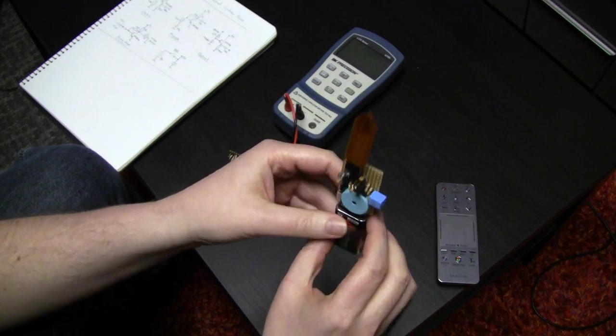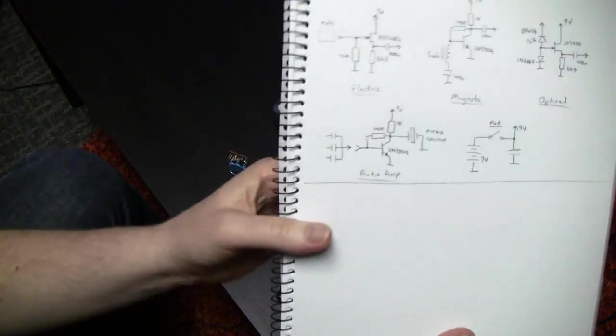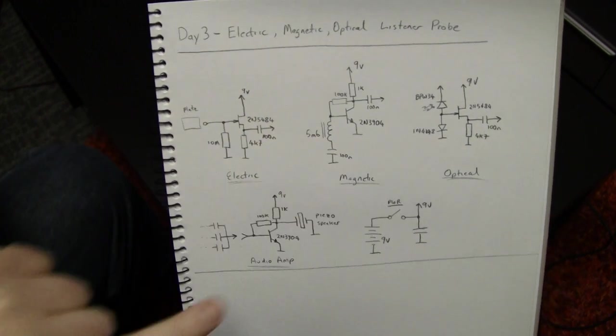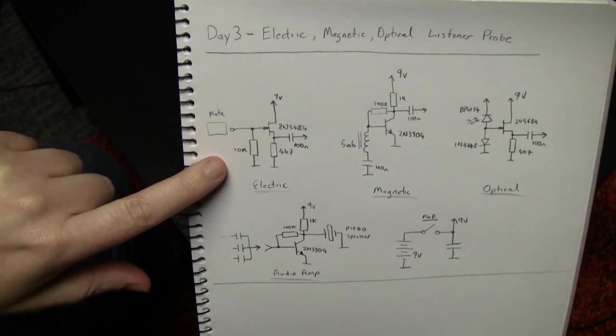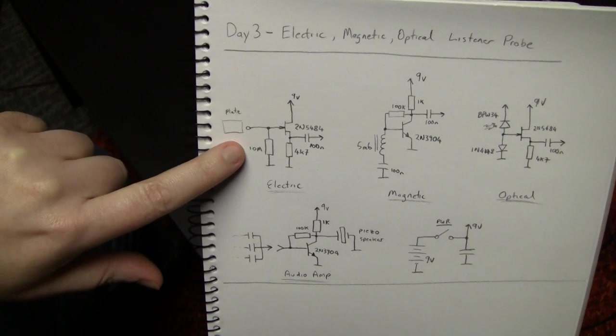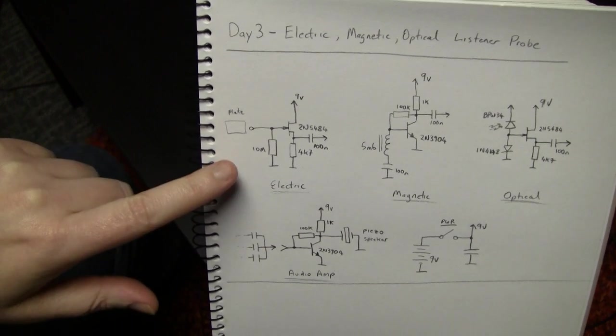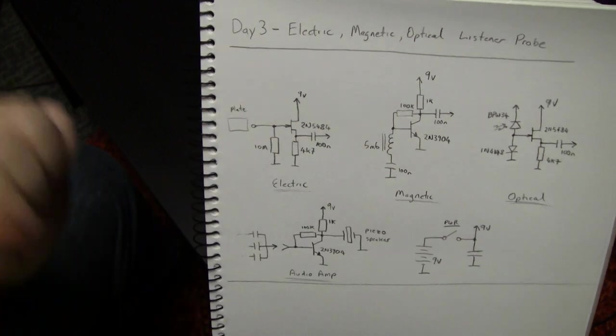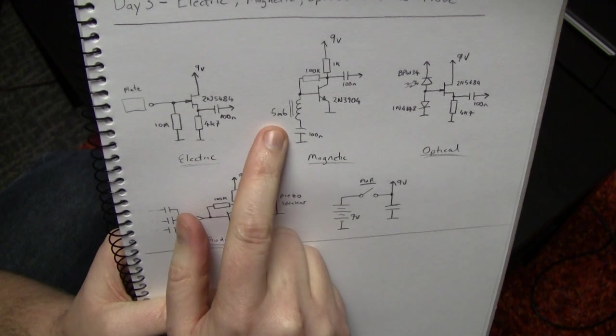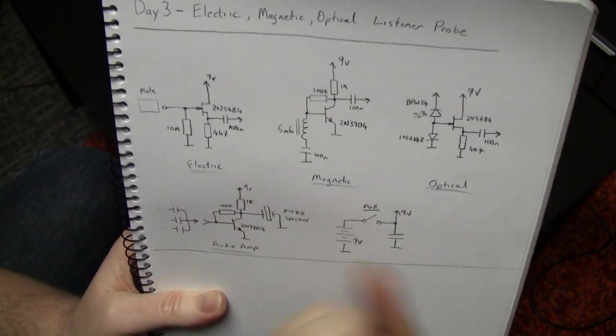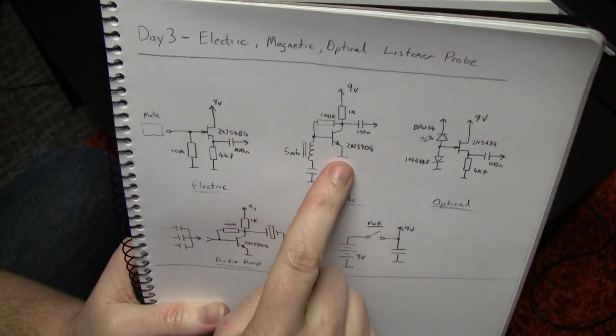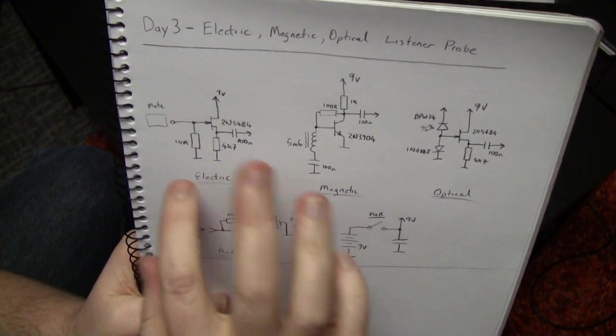The circuit's super simple. There's three different front ends. This is the electric front end, basically identical to last year's. It's just a 10 meg resistor to bias the FET and a metal plate. A reasonable size metal plate makes it more sensitive. The magnetic version has a 5.6 millihenry inductor which is just a ferrite choke with about 20 ohms DC resistance.